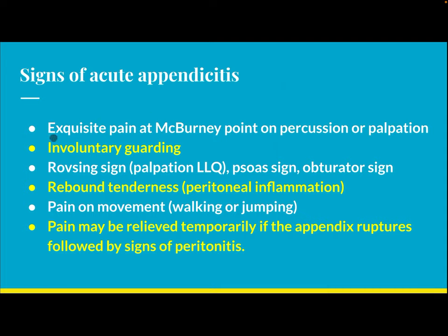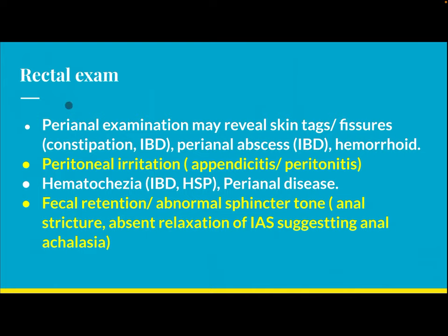Signs of acute appendicitis include exquisite pain at McBurney's point on percussion or palpation, involuntary guarding, Rovsing's sign (palpation of the lower left quadrant), Psoas sign, obturator sign, rebound tenderness indicating peritoneal inflammation, and pain on movement such as walking or jumping. Pain may be relieved temporarily if the appendix ruptures, followed by signs of peritonitis.